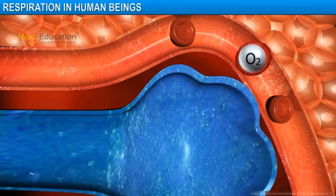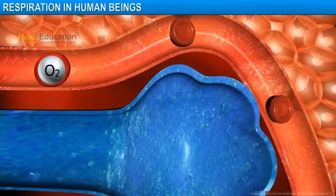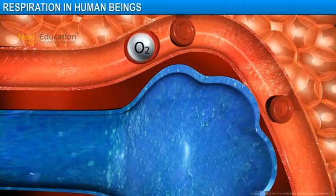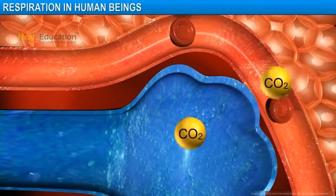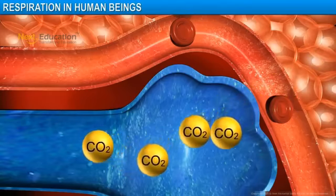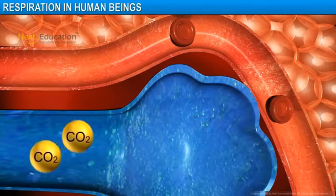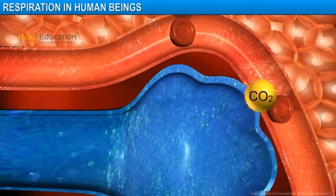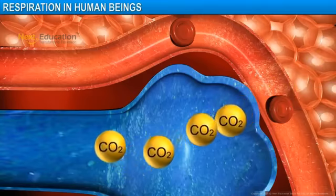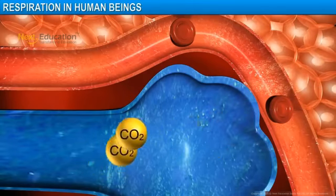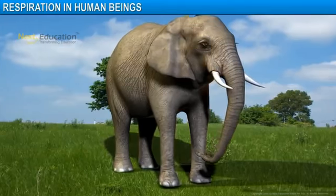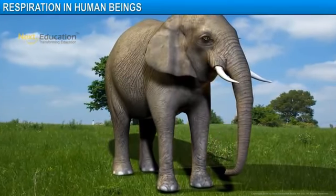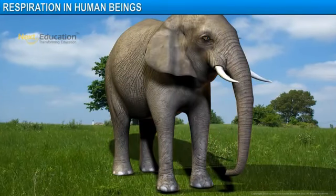The oxygen in the red blood cells is then transported to all the cells in the body. The cells in turn release carbon dioxide, which diffuses into the blood and is then released into the alveoli. In large animals, like elephant, it is difficult for oxygen to reach all parts of the body through diffusion.